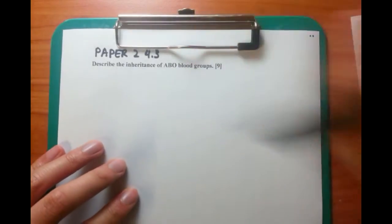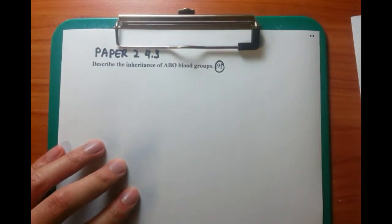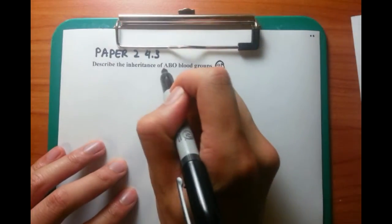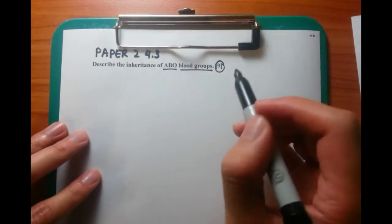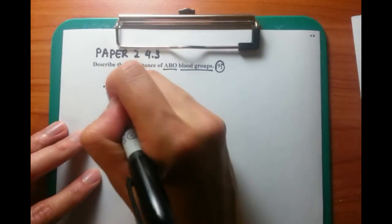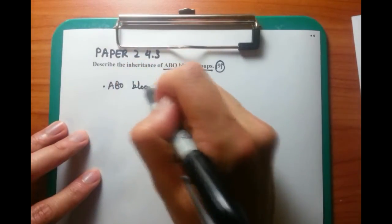This question is describe the inheritance of ABO blood groups, which is worth a total of nine marks. And it's a complicated question, but a complicated question that does have easy marks attached to it.